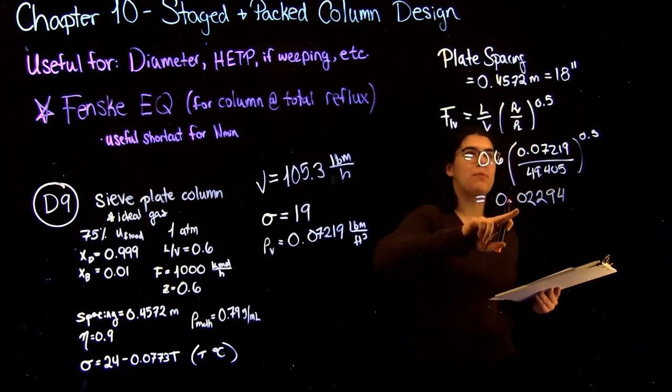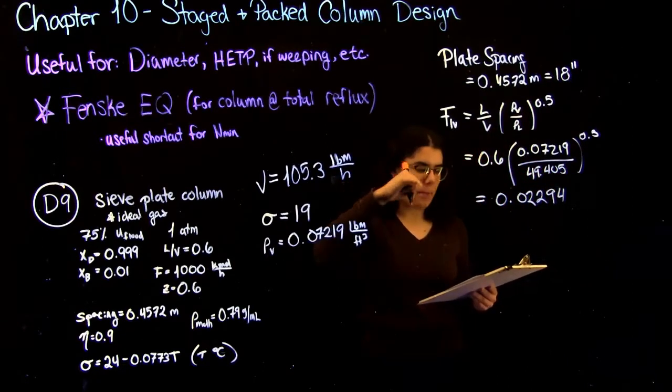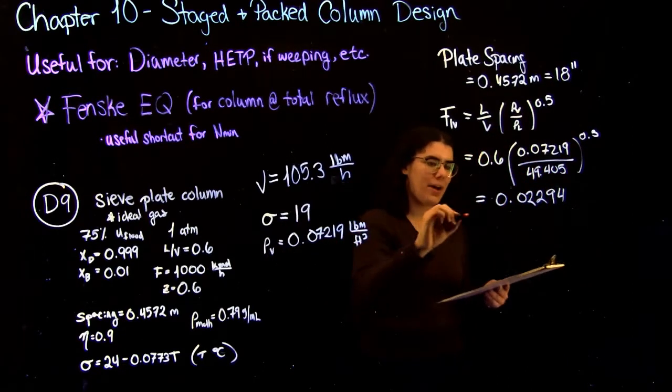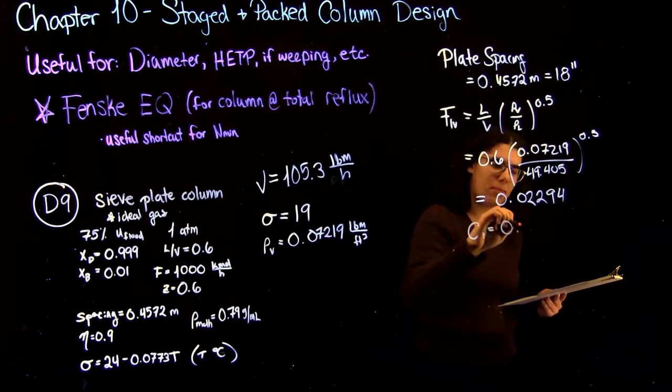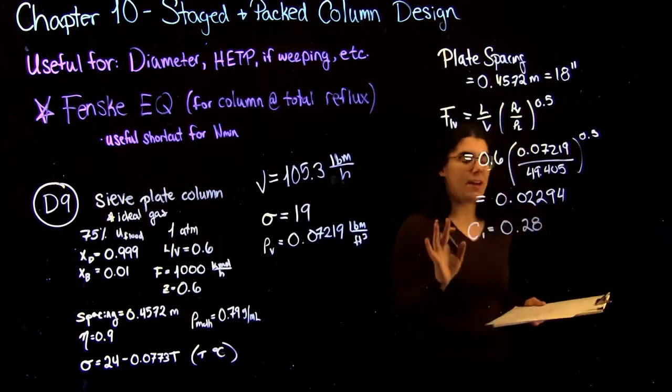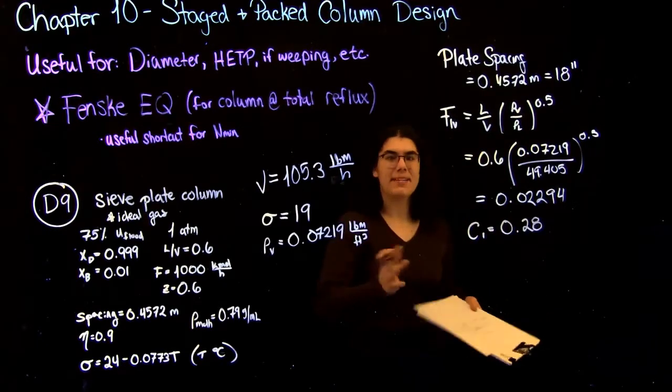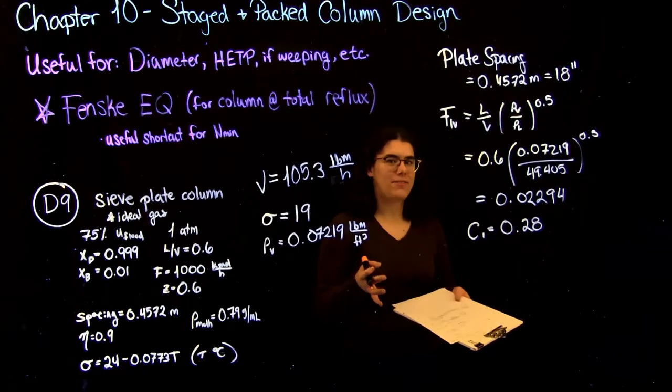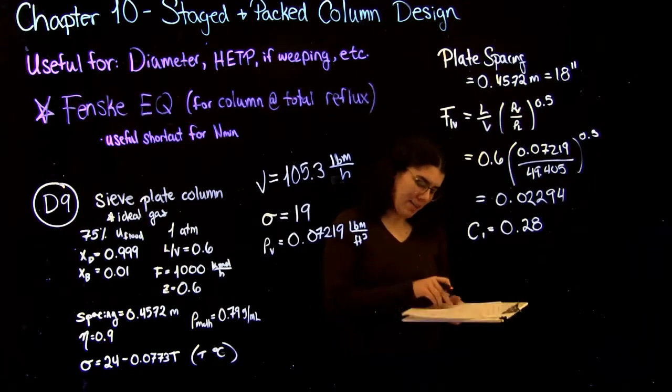So if you see where this point on this line is, and then check to see what your capacity factor is on your y axis, you're going to find that it's approximately equal to 0.28. If you get anywhere from 0.25 to about 0.3, you're probably okay, because it is just reading a graph. So there is a little bit of leniency with the value you choose.